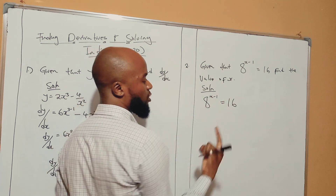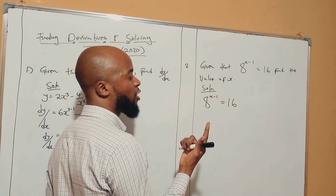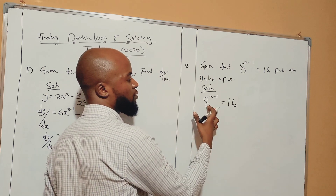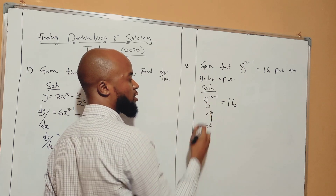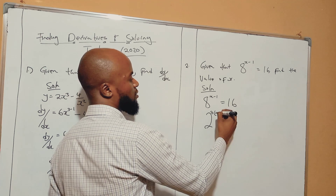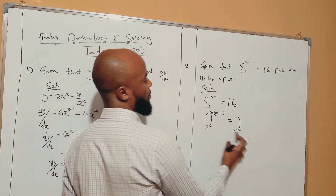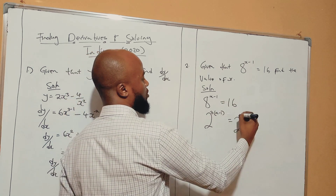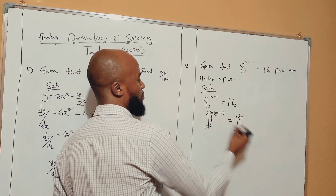This 8 and 16 are known as the base. What you're going to do is change these bases to become the same. You're going to look for a number — the number will be 2. How many times should you multiply 2 to give you 8? It's 3. So you multiply 2 three times to get 8: 2 times 2 times 2. You see this x minus 1? Put it in brackets: x minus 1. It's equal to. This 16 becomes 2 to the power 4, because the bases have to become the same. How many times should you multiply 2 to give you 16? It's 4 times: 2 times 2 times 2 times 2 is 16. Here, we cancel the same bases.